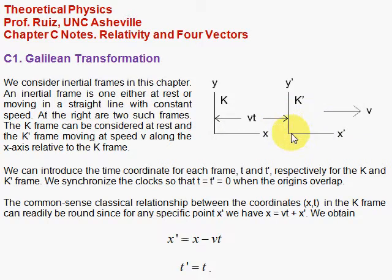Notice that we set this up so that when the origins coincide, we synchronize the clocks, and T equals T-prime equals zero. Then, from that time on, we can easily measure how far the origin is down the road by the formula V times T, since the K-prime frame is moving at velocity V, and it starts its journey when we have T equal T-prime equals zero here at the origin.